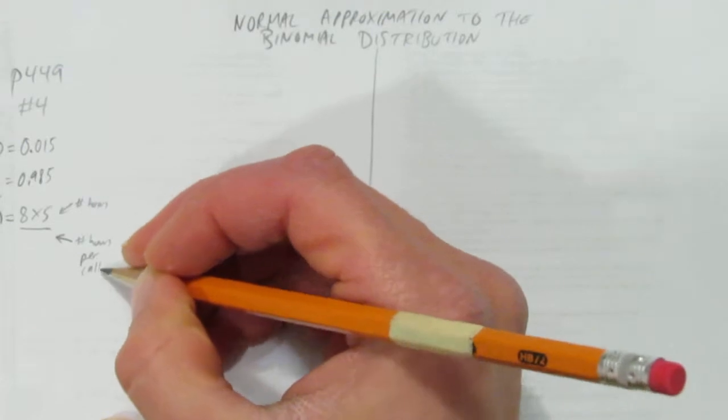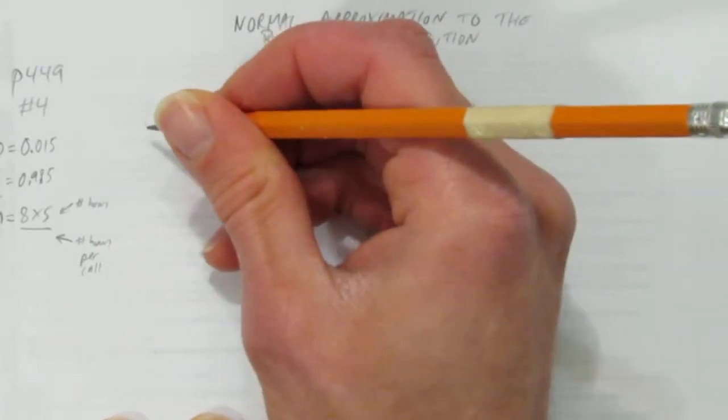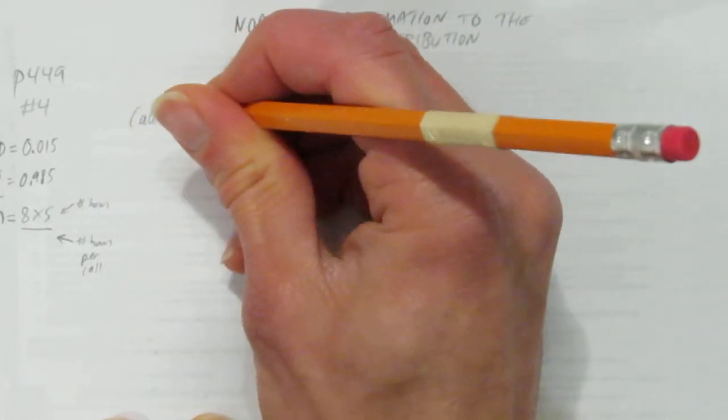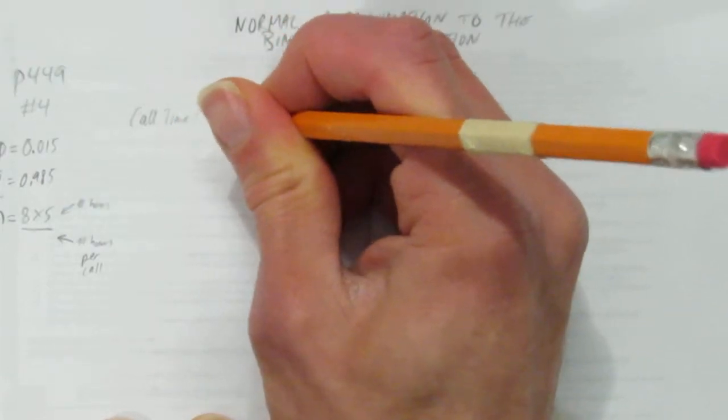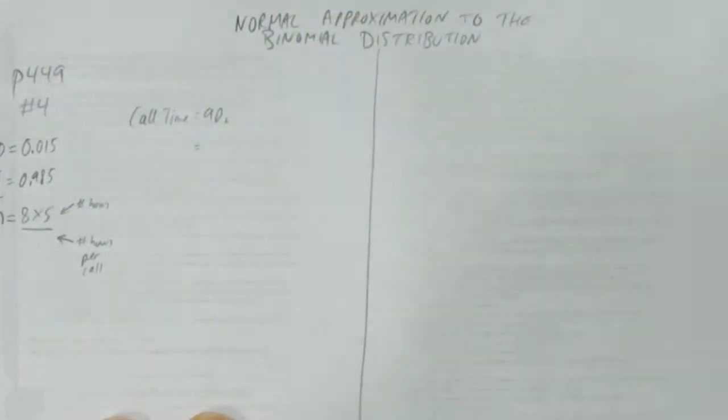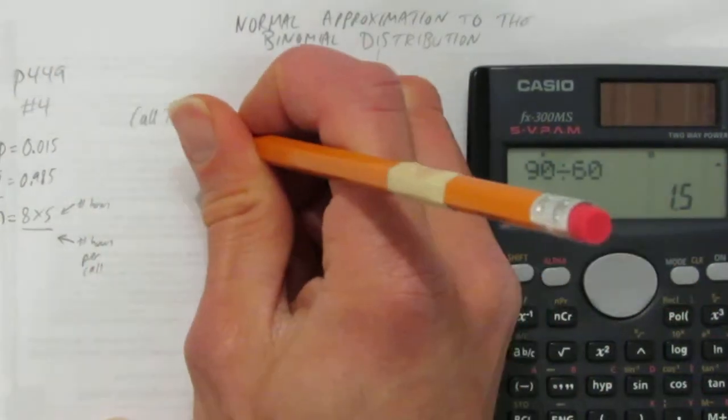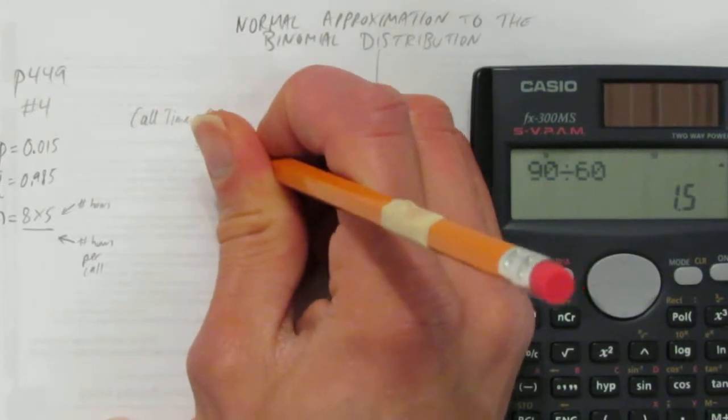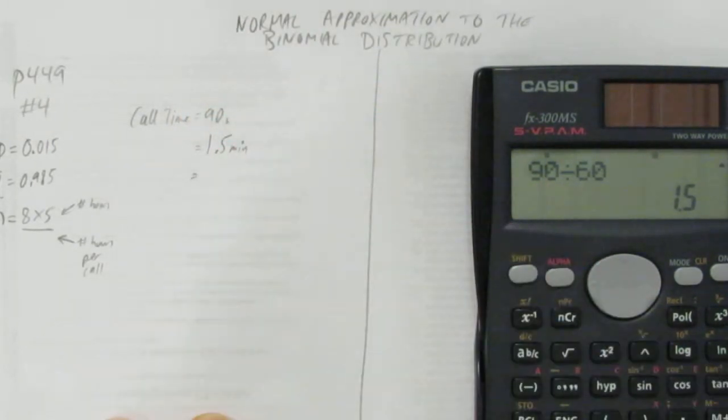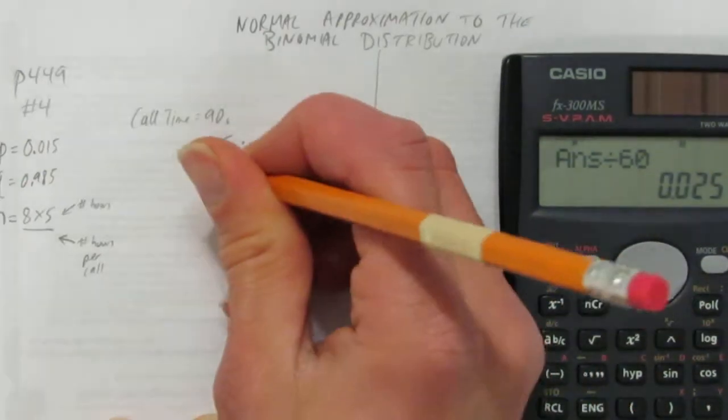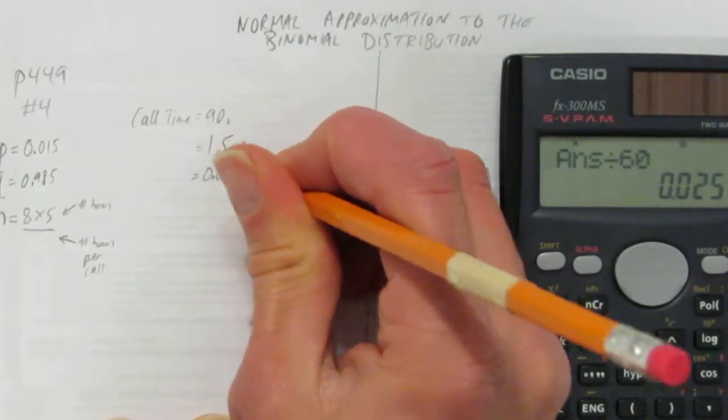We'll get the number of calls by doing number of hours he calls divided by how many hours each call takes. We don't have how many hours each call takes, but we do have the fact that his call time takes 90 seconds. Convert 90 seconds to minutes. We just divide by 60. So 90 seconds is one and a half minutes. And then divide that by 60 again, it's 0.025 hours.